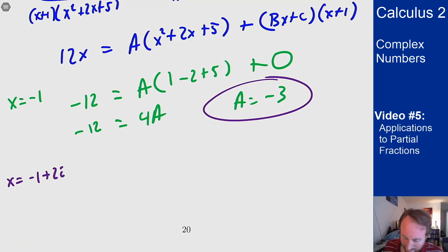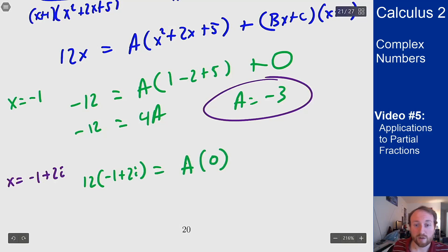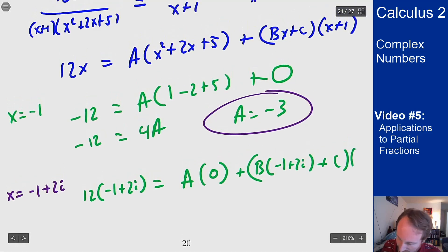So what I get then is 12(-1+2i) equals A times, and because this is a root of this equation I know this is zero, right x²+2x+5 is zero because this is a root of the quadratic equation that I have here. And then plus B(-1+2i) plus C times (x+1) which in this case is just 2i because the +1 cancels the -1 from there. I now want to expand this out.